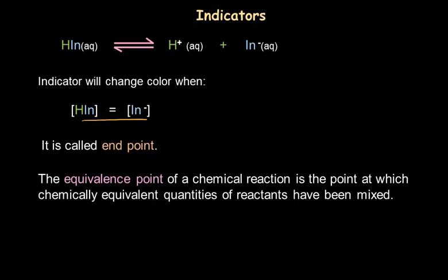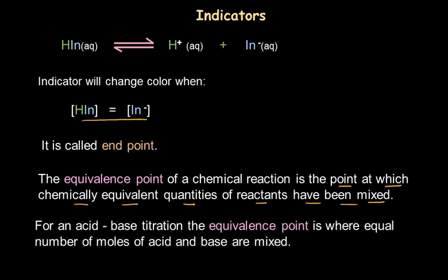We also need to know about the equivalence point. The equivalence point is the stage at which chemically equivalent quantities of reactants have been mixed. In an acid-base titration, the equivalence point is where equal number of moles of acid and base are mixed — irrespective of whether the acid or base is weak or strong. Such a stage is called an equivalence point.